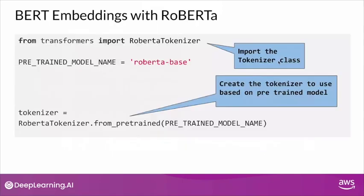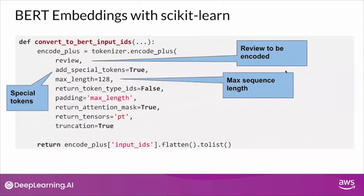Time to look at some code. To start using the RoBERTa tokenizer, you first import the class and then construct an object of the tokenizer, specifying the pre-trained model — in this case, RoBERTa base. Once you have the tokenizer object, you will run the encode_plus method. The encode_plus method expects a few parameters: the review, which is the raw review text from your product review dataset that needs to be encoded; a true or false flag for whether to add special tokens; and the max length parameter that specifies the maximum sequence length, along with a few other parameters.